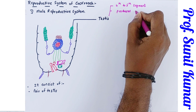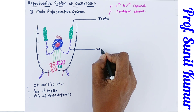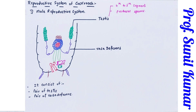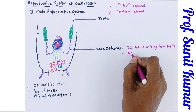The vas deferens arises from the testis. It is a kind of thin tubule that arises from the testis and carries all the sperm to the seminal vesicle, where they will be stored temporarily.